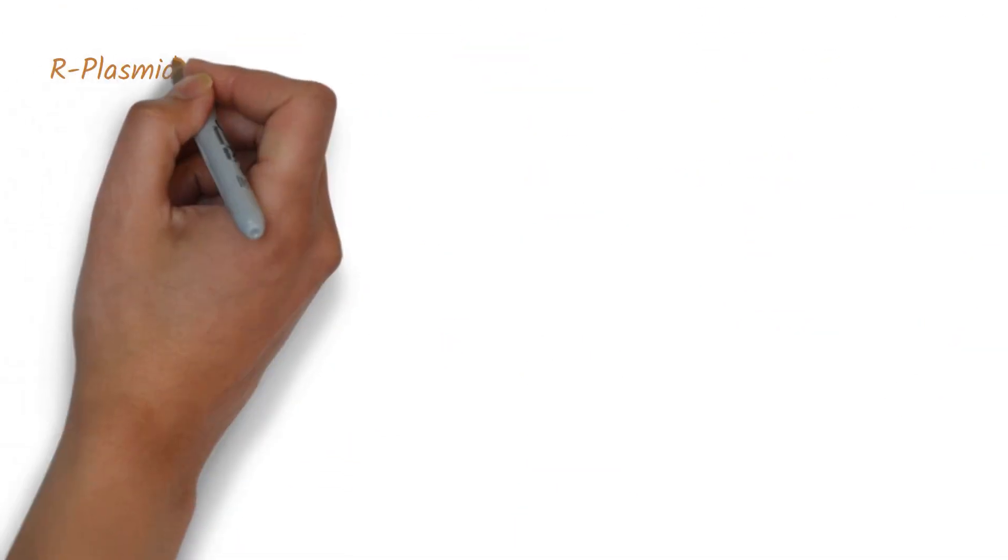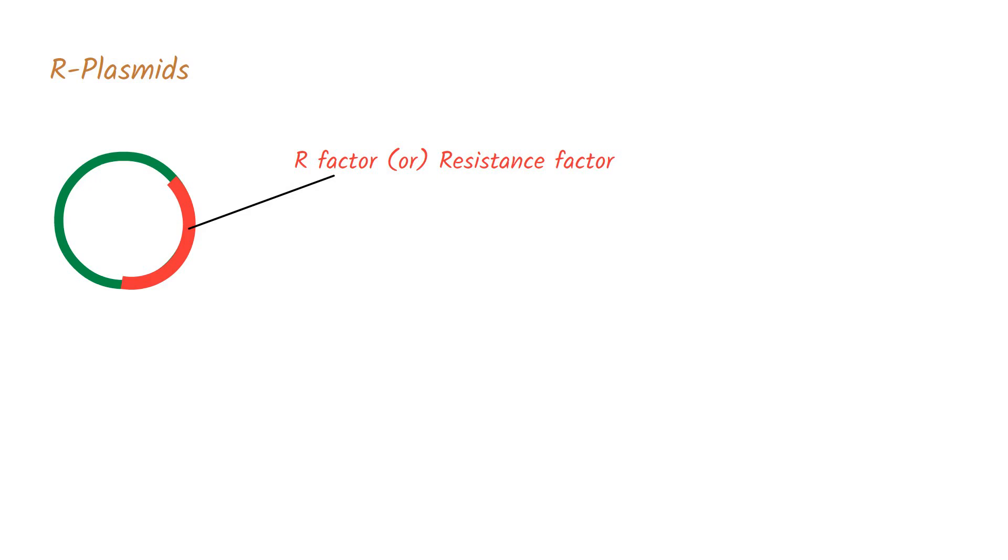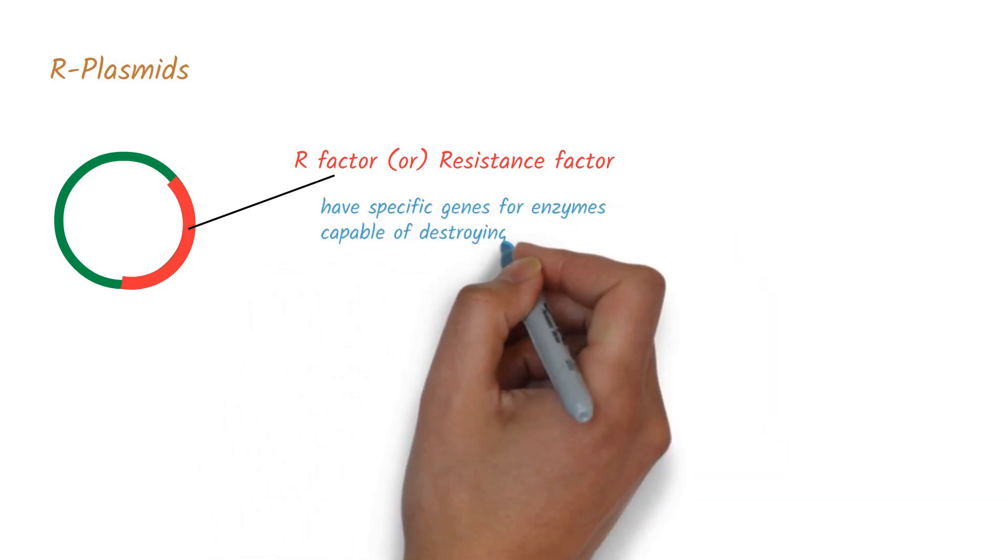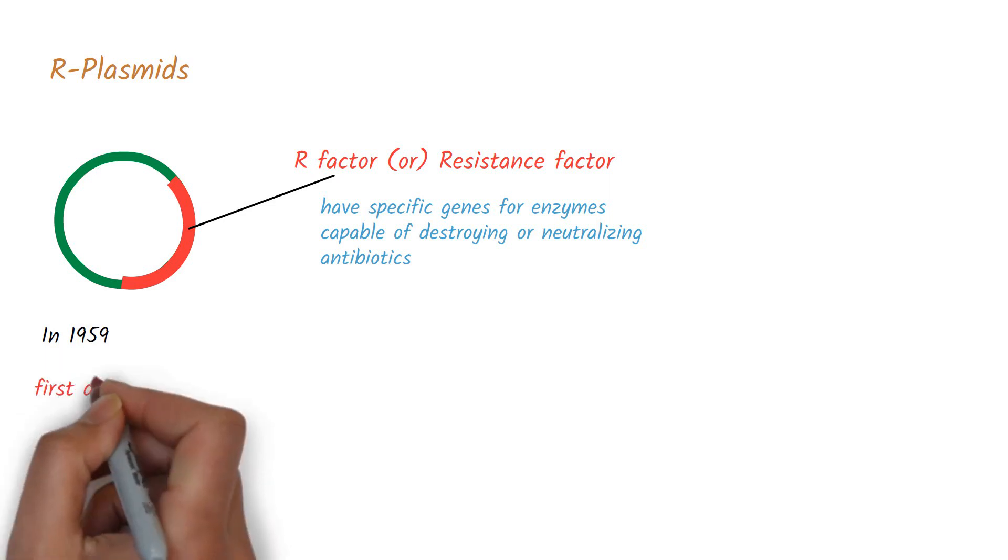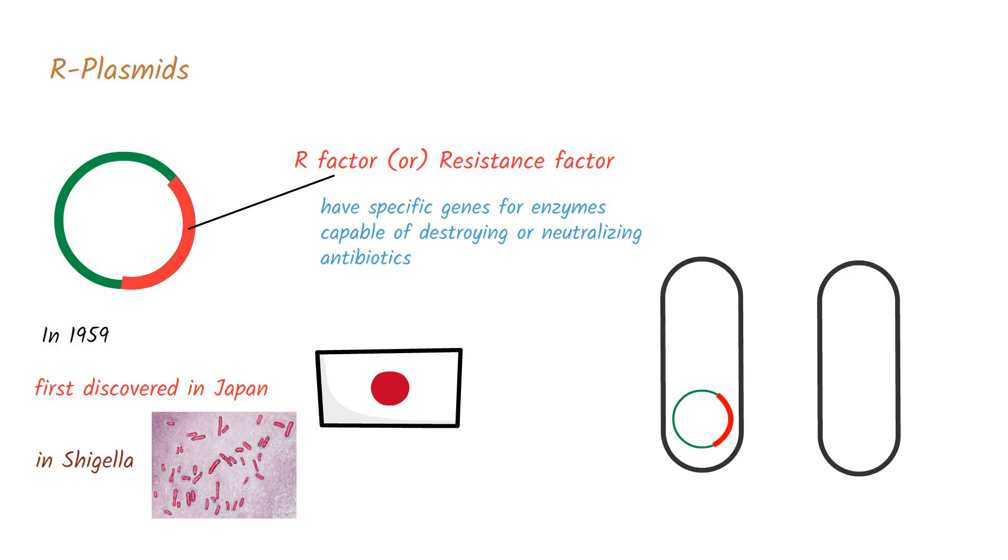R plasmids are the plasmids having R factor, or resistance factor. R factors have specific genes that code for enzymes capable of destroying or neutralizing antibiotics. In the year 1959, resistance factor genes were first discovered in Japan in the strains of Shigella. When a strain having the R factor conjugates with other bacterial cells, a copy of R plasmid is transferred and therefore provides the strain with the property of antibiotic resistance.